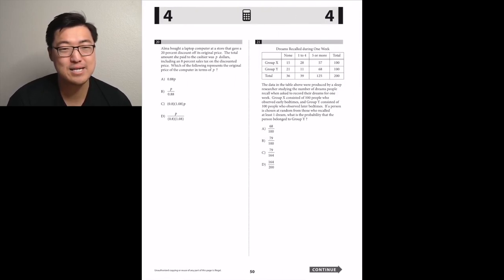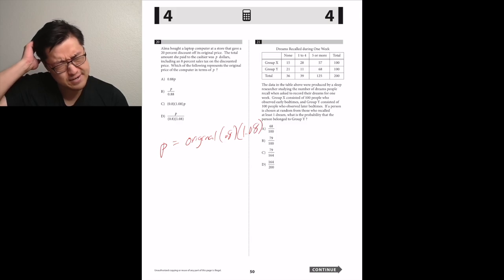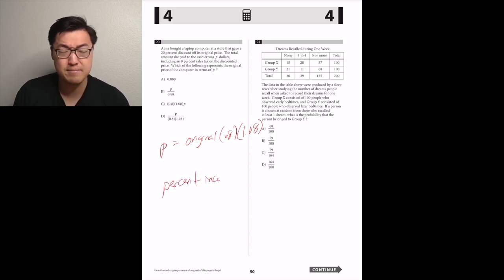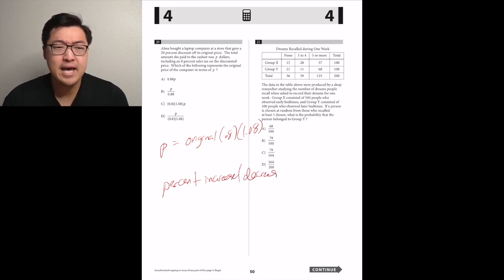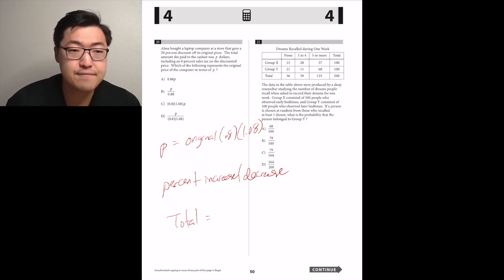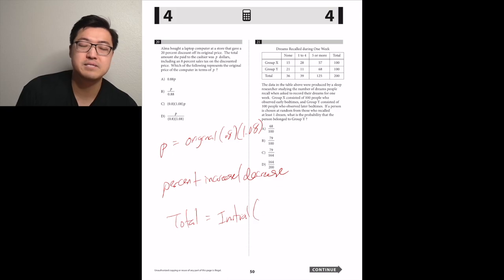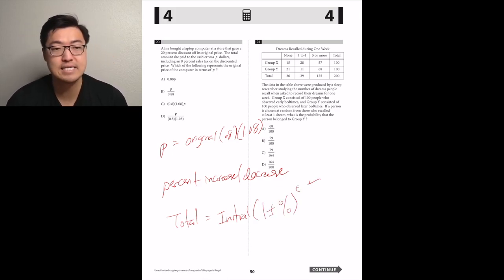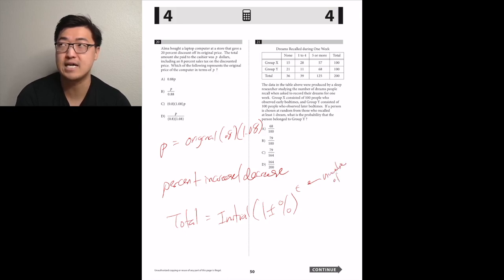Number 20, Alma bought a laptop computer at a store that gave a 20% discount off its original price. The total amount she paid to the cashier was P dollars, including an 8% sales tax on the discounted price. Which of the following represents the original price of the computer in terms of P? So P is the price that she paid. So this is going to be percent increase decrease formula. If it had a 20% discount, I know I'm going to multiply the original price by 0.8. And because there was a tax, an 8% sales tax, that means that I'm also going to multiply the original price by 1.08 to indicate an 8% increase. So the formula would be P is equal to original price times 0.8 times 1.08. So in order to solve for original price, you would have to divide by the 0.8 and 1.08. That would give you D. It's the only one that has those in the denominator.